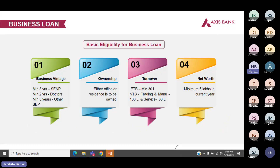For doctors, we offer tenor up to five years. This is the basic eligibility for business loan. First is business vintage — we ask minimum three years from SENP, that is self-employed non-professionals, and minimum two years from doctors, and minimum five years from other self-employed professions.